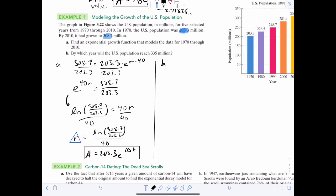So for part B, it says by which year will the US population reach 335 million? So 335 should equal 203.3 times E triangle R T. Now you've got to remember that triangle R is a constant, that's no longer a variable. So let's solve for T. We'll divide by 203.3. E to the RT, that's equal to 335 over 203.3. Let's change it to a log. So natural log of 335 over 203.3, that's equal to triangle RT. We're going to divide by triangle R.